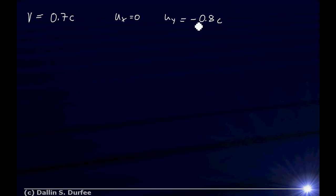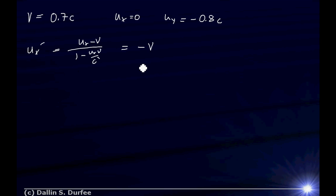We're transforming still into a frame that's moving at 0.7C, but now UX equals 0 and UY equals negative 0.8C, so we have two components to worry about. UX prime equals UX minus V divided by 1 minus UX·V over C squared. Since UX is 0, this just turns out to be minus V. So the spaceship had no X component of velocity, but because we're moving in the X direction, we see that ship moving backwards in the X direction at the same velocity.